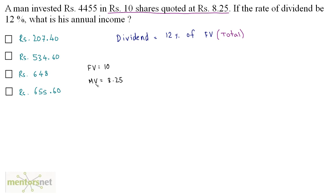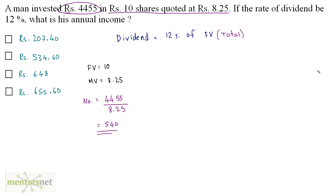We can calculate the number of shares and then the total face value. The number of shares equals the total amount invested divided by the market value of one share: 4,455 ÷ 8.25 = 540 shares. The total face value is then 540 × 10 = Rs 5,400.